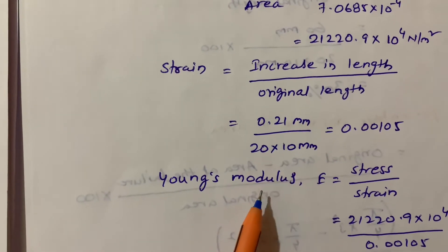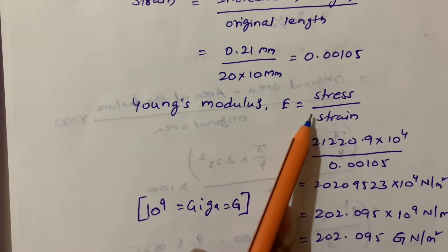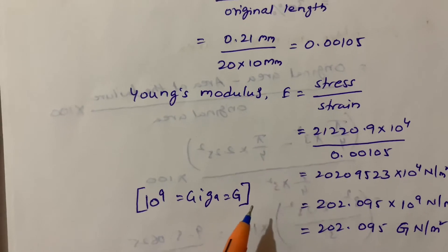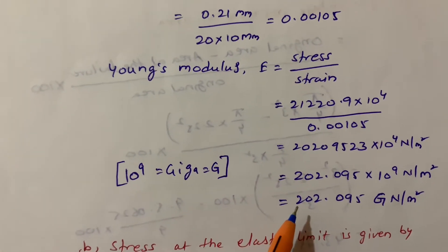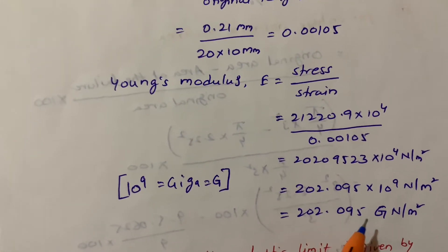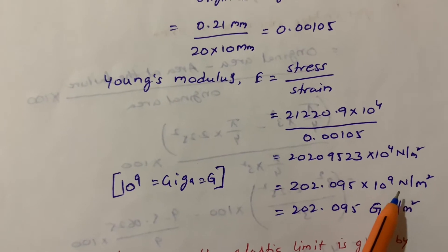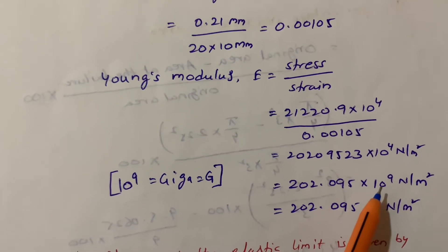I substituted these values in Young's modulus formula, stress by strain, and I got 202.095 times 10 to the power 9 N per meter square. 10 to the power 9 means gigapascals.